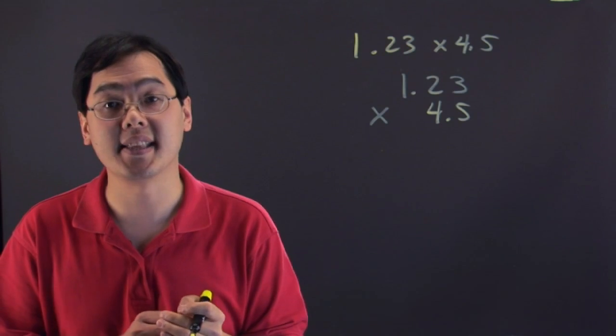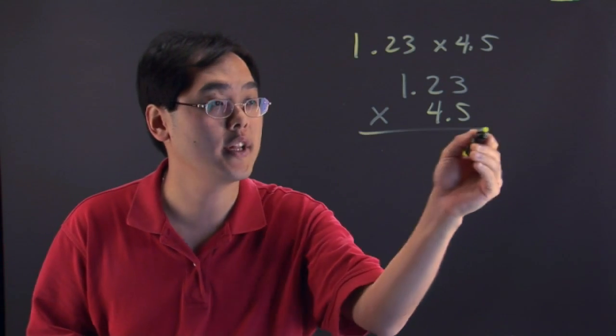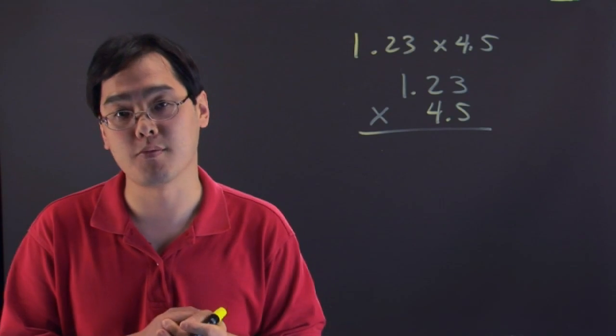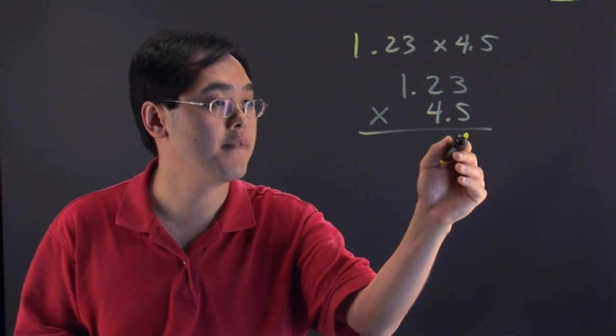We're going to address the decimal places at the end of the problem, but right now for all intents and purposes, you will treat it like you normally would a long multiplication problem. So let's see what we have. 5 times 3 is 15.